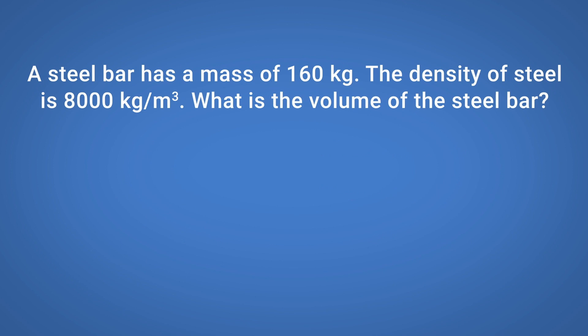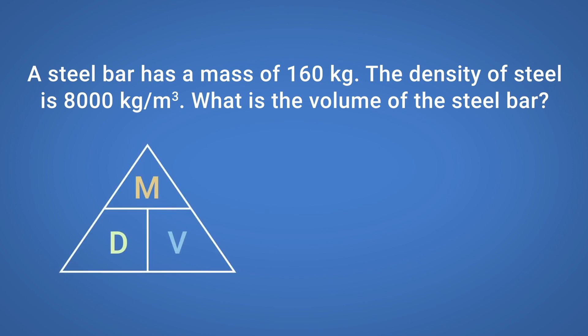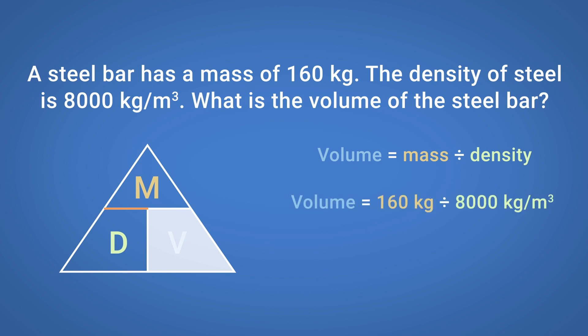A steel bar has a mass of 160 kilograms. The density of steel is 8,000 kilograms per metre cubed. What is the volume of the steel bar? Use the formula triangle to help. Cover up volume to reveal the formula: volume equals mass divided by density. Volume equals 160 divided by 8,000 kilograms per metre cubed, so the volume of the steel bar is 0.02 metres cubed.